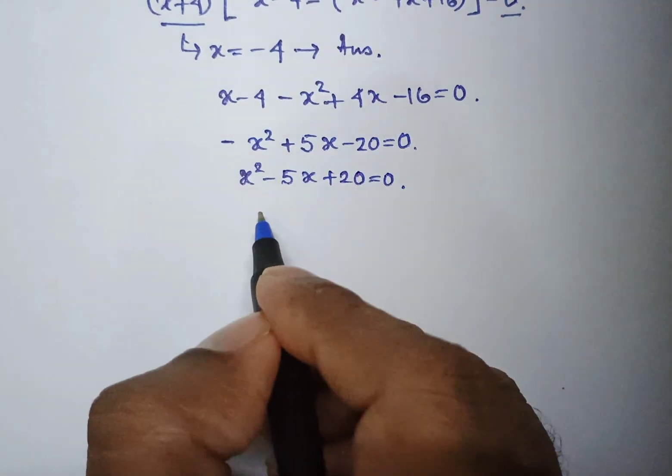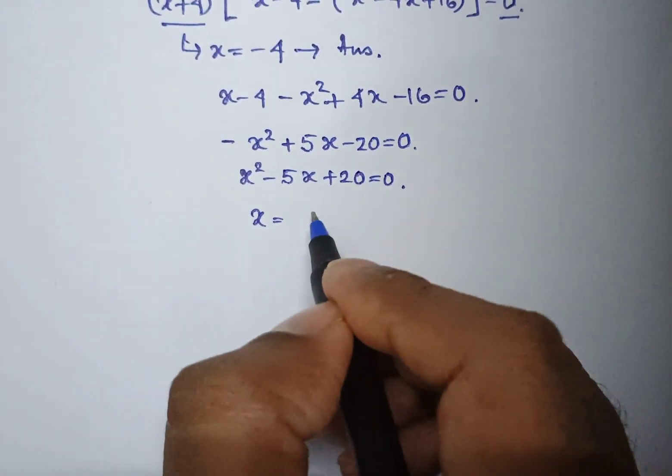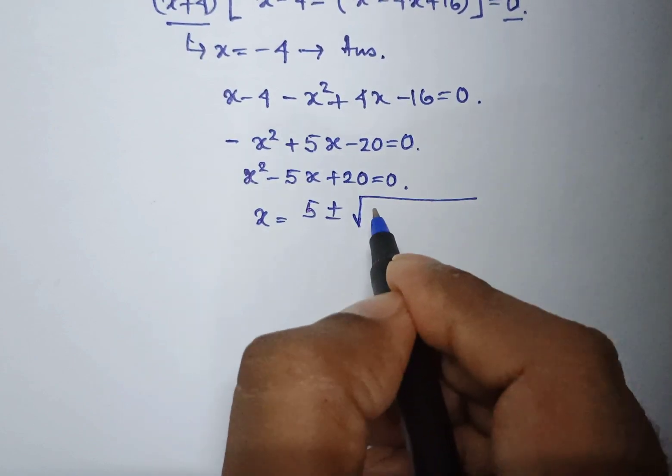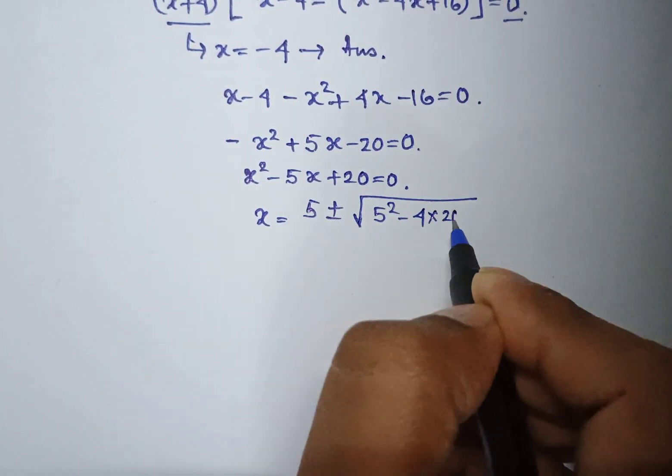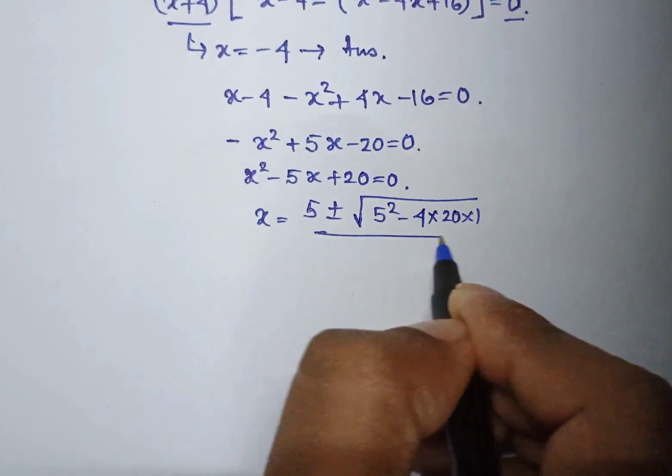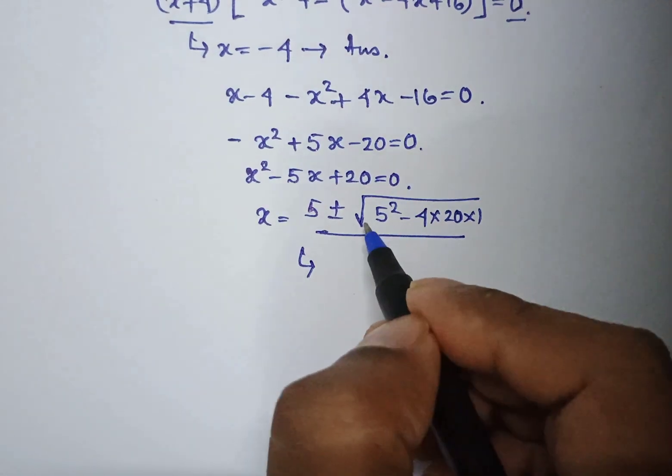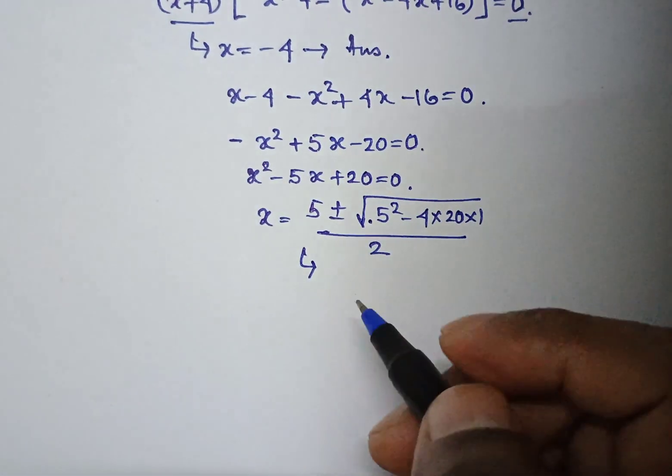Applying the solution for quadratic equation, we can find x equal to 5 plus minus square root of 5 square minus 4 into 20 into 1 by 2. So, this is an imaginary number because the square root of a negative number cannot be real.